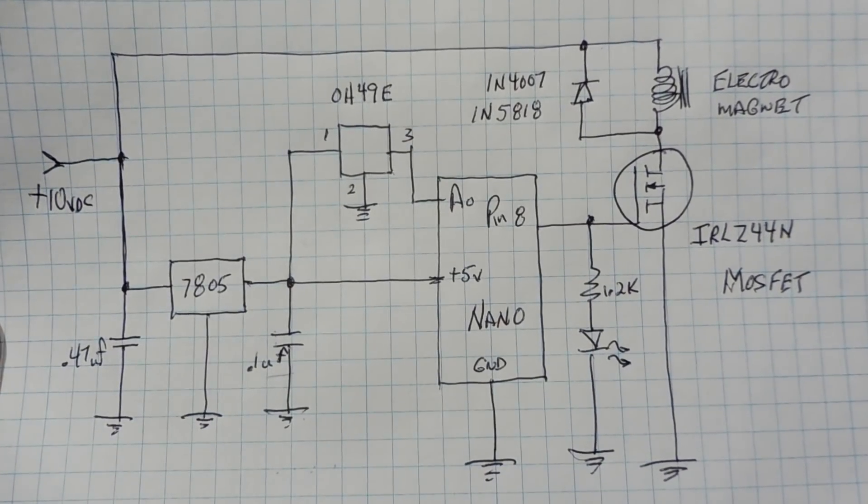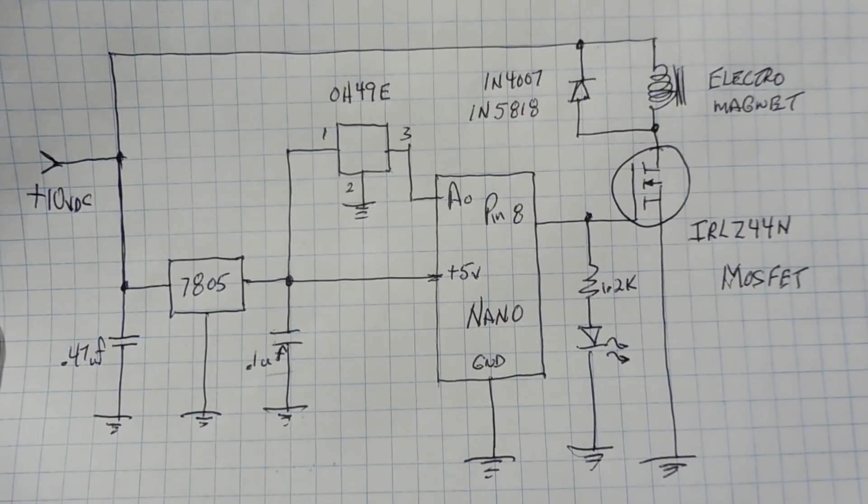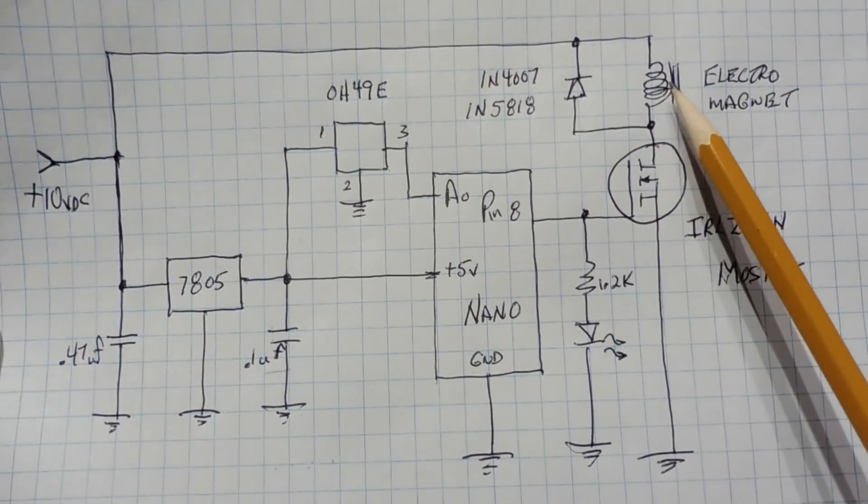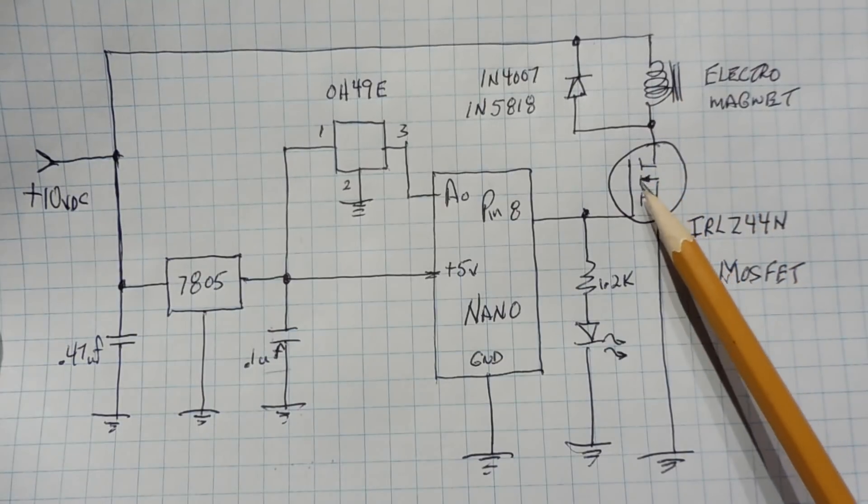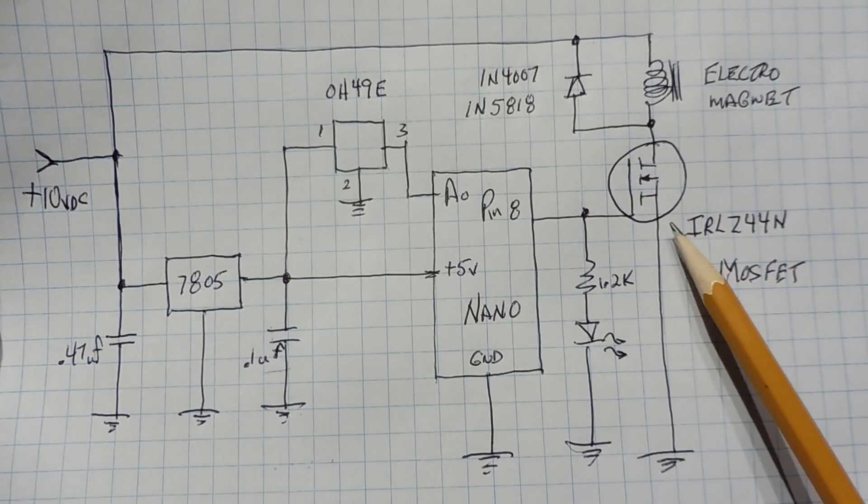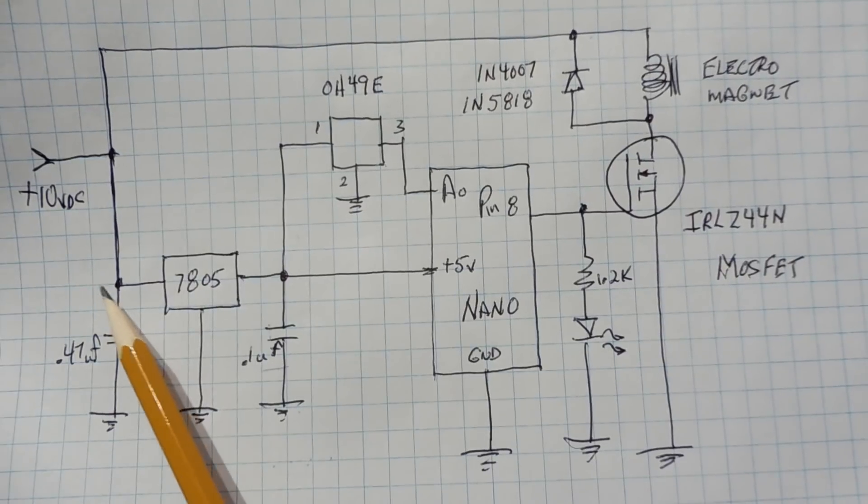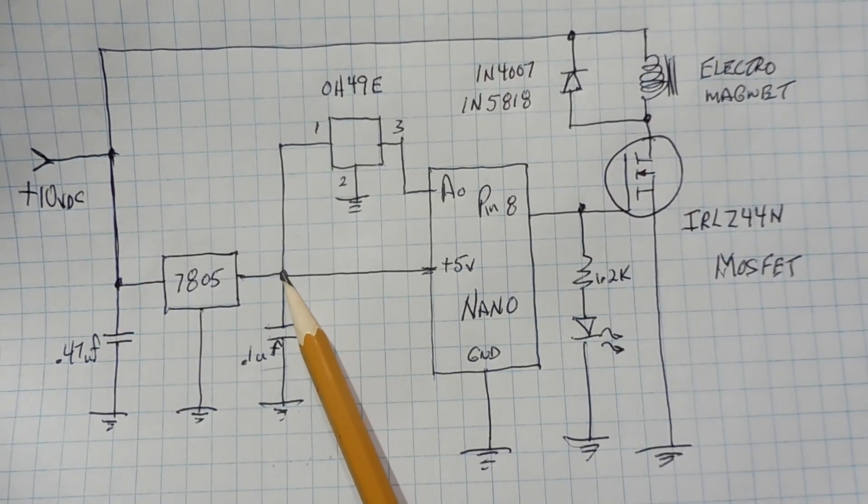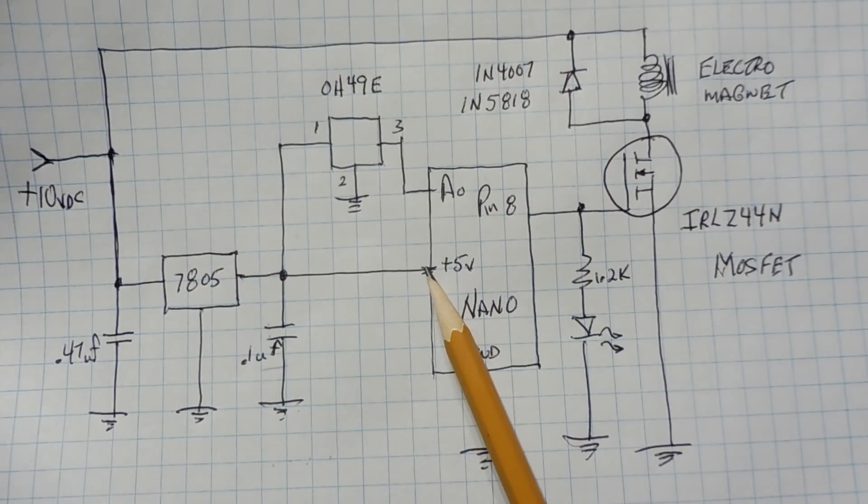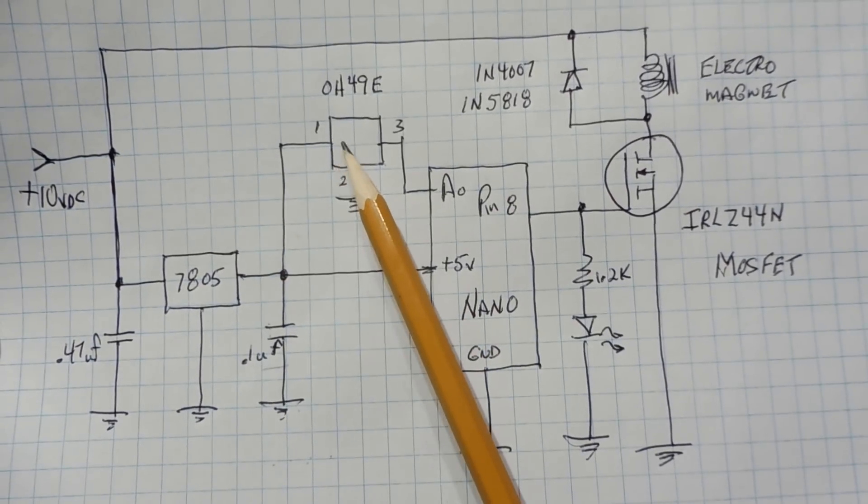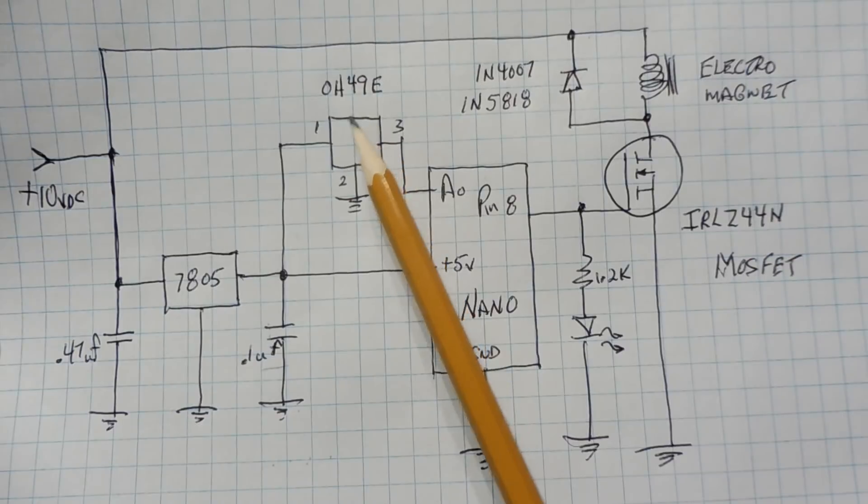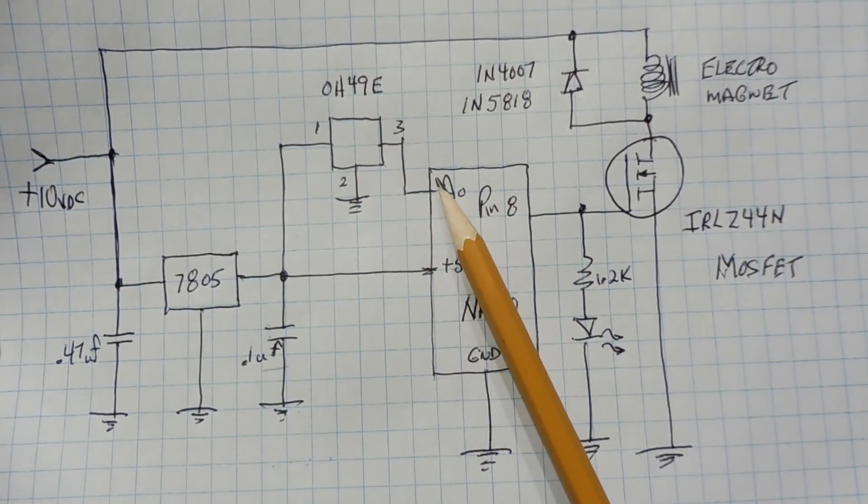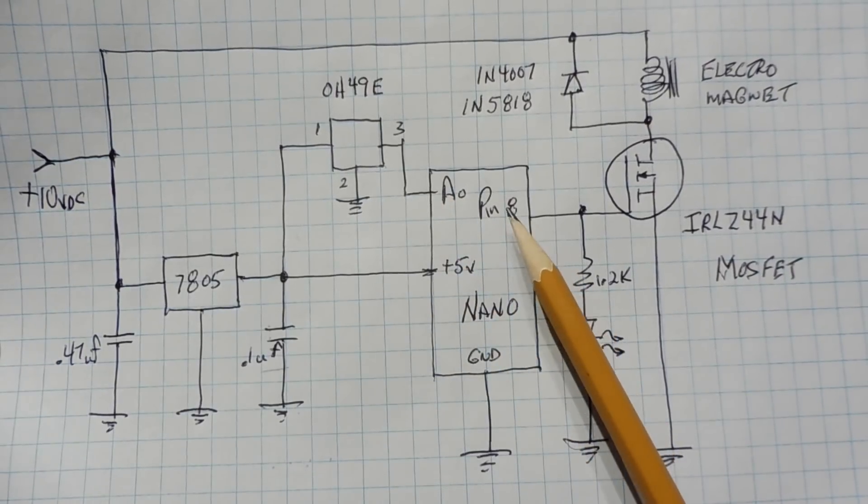Okay, here's the schematic diagram of my levitation project. It's powered by 10 volts, so the 10 volt power supply is feeding the electromagnet, which is turned on and off by the MOSFET, the IRLZ44N. Now the 10 volts is also feeding the input of the voltage regulator, 7805, so we're getting 5 volts out of the regulator, which is fed into the Arduino Nano, also up to the Hall Effect sensor, the OH49E. Now the output of the Hall Effect sensor is fed into the A0, the ADC0 of the Arduino Nano.